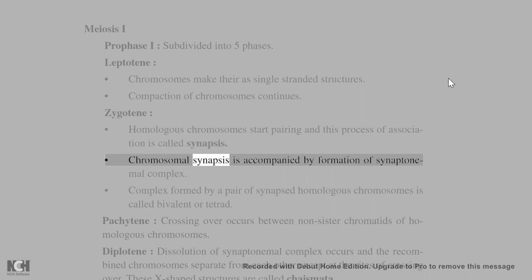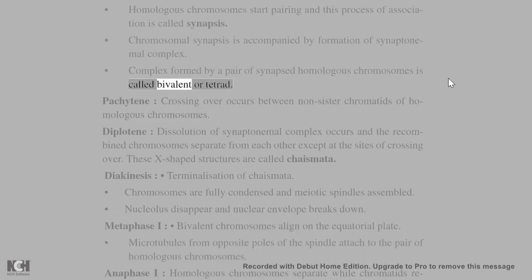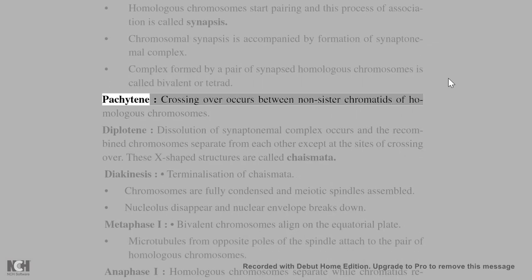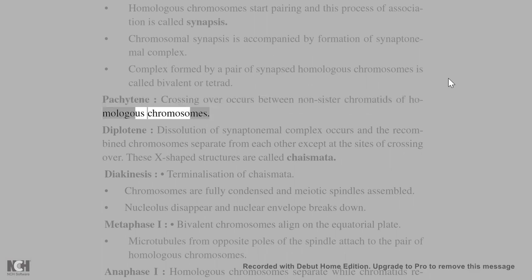Chromosomal synapsis is accompanied by formation of synaptonemal complex. The complex formed by a pair of synapsed homologous chromosomes is called bivalent or tetrad. Pachytene: Crossing over occurs between non-sister chromatids of homologous chromosomes.